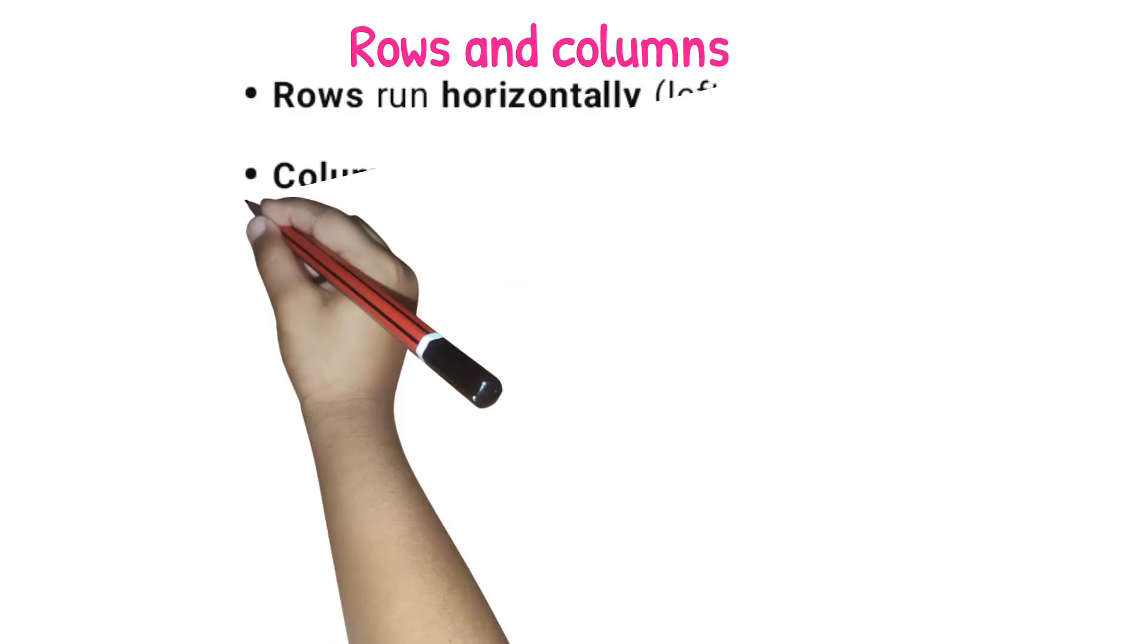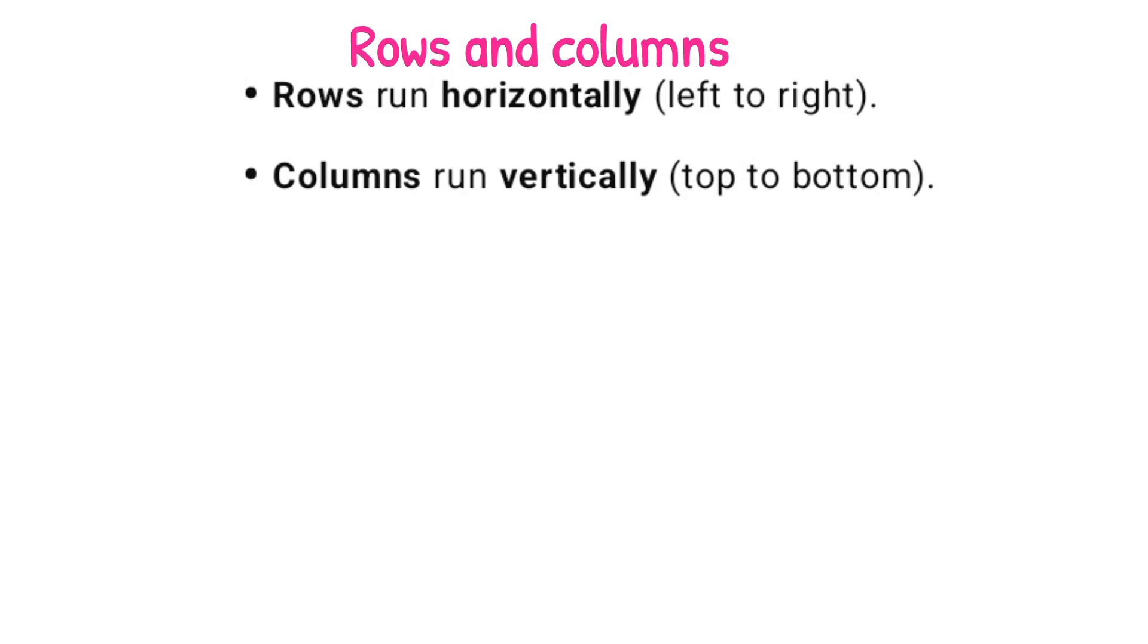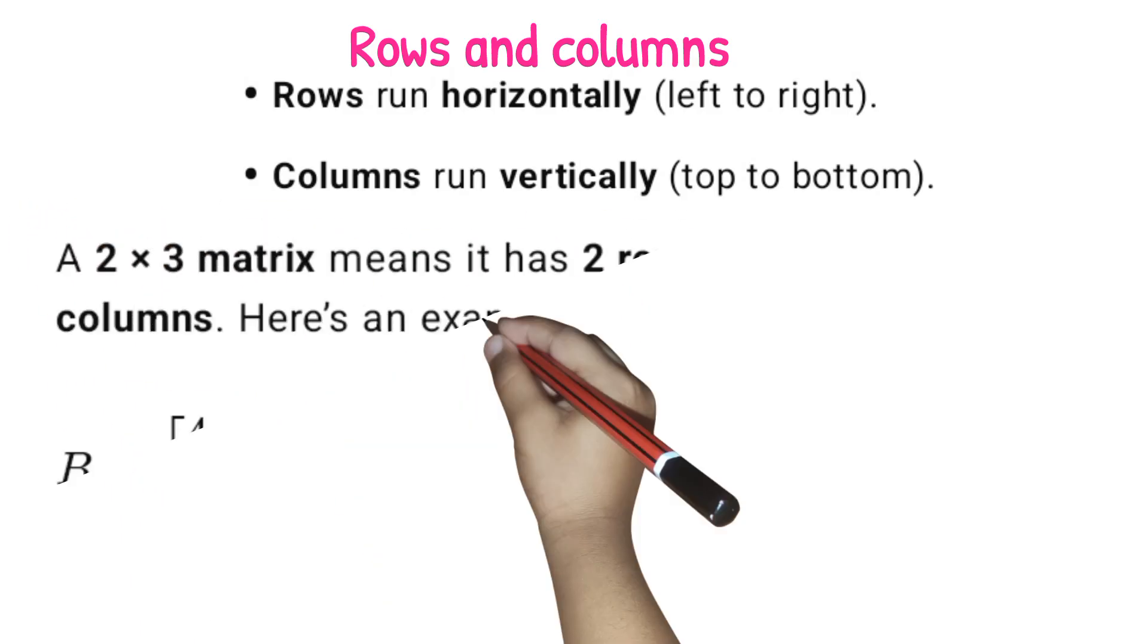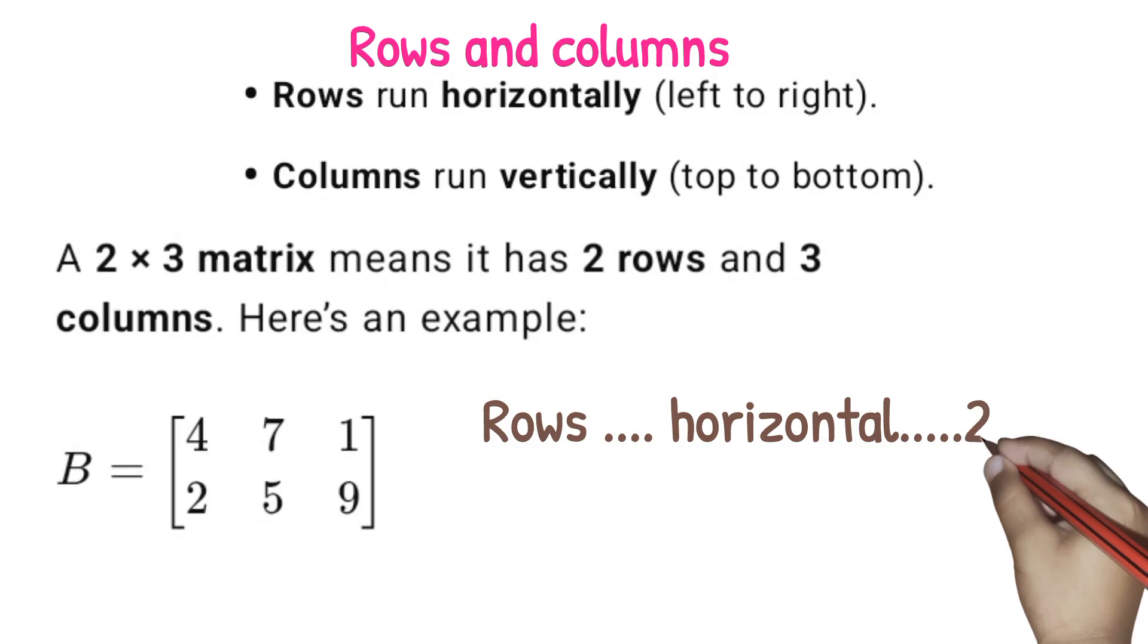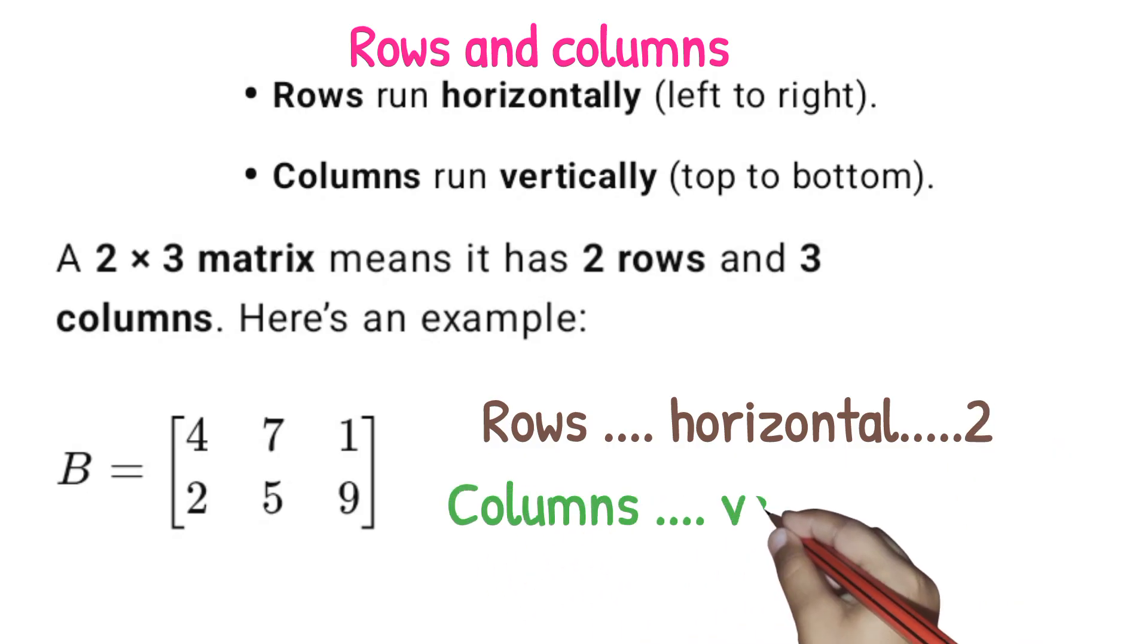Rows are horizontal, they run from left to right, and columns run from top to bottom. A two by three matrix means it has two rows and three columns. Rows here are two, that is four and two, and the columns are three: four, seven, one.